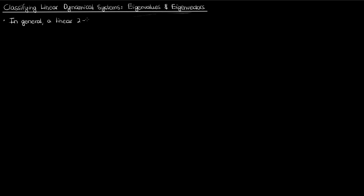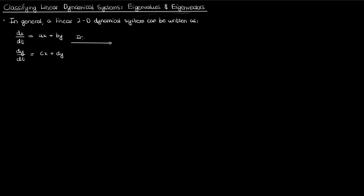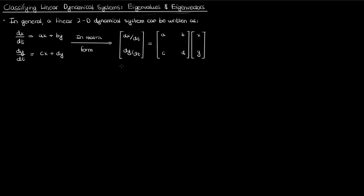Recall from a couple of videos ago that a general way of writing a two-dimensional linear dynamical system is as follows. You can also recast these equations in matrix form. I can label the derivative vector as x-dot, the coefficient matrix as capital A, and the function vector as x. This gives us the matrix equation for our linear dynamical system, which I'll call equation 1.